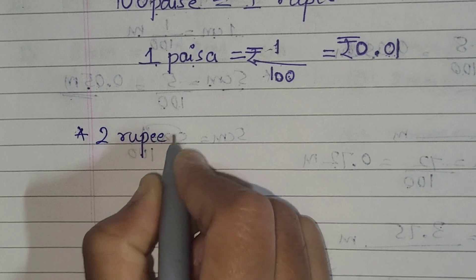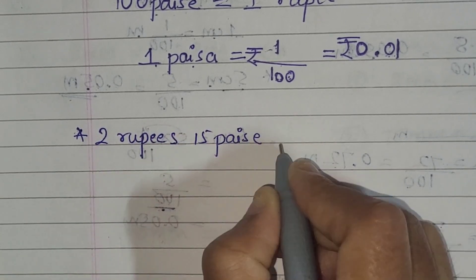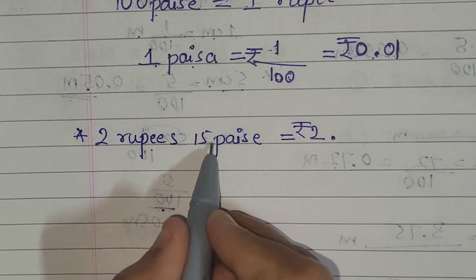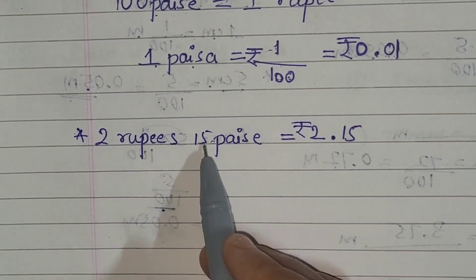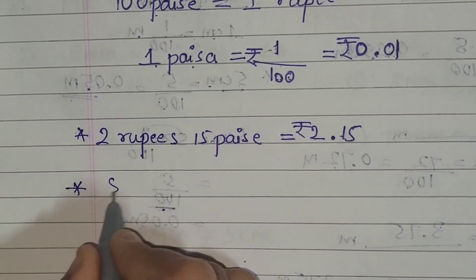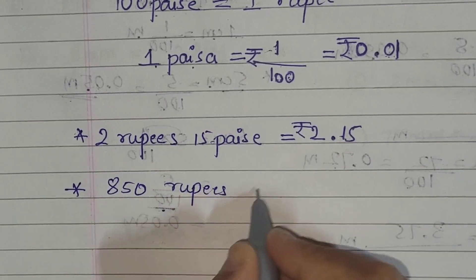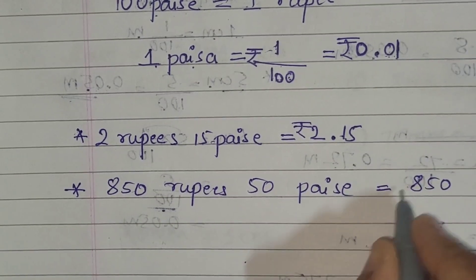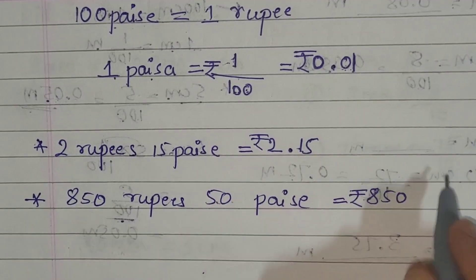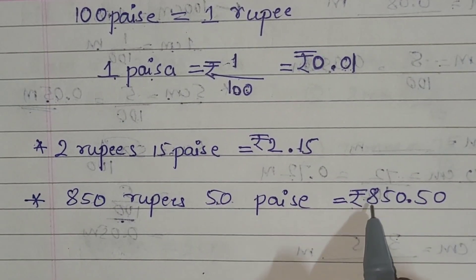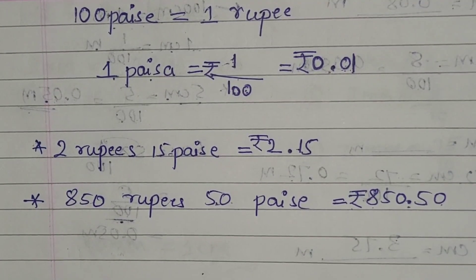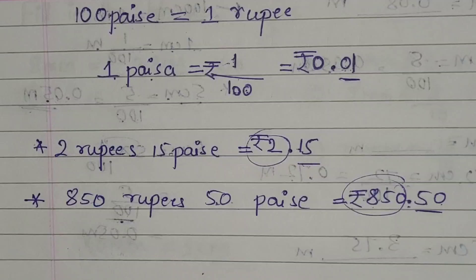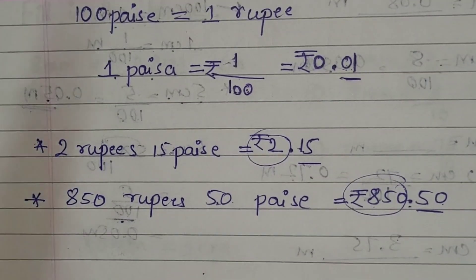Let's take one example: 2 rupees 15 paisa. You write the rupees first, then put the decimal point, then the paisa — so it becomes 2.15 rupees. Let's take one more example: 850 rupees 50 paisa. You write 850, then the decimal point, then 50 paisa, giving rupees 850.50. After the decimal point, whatever number you write is considered paisa, and before the decimal point is your rupees.